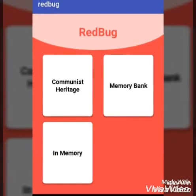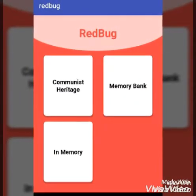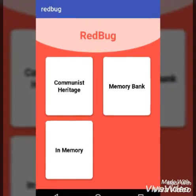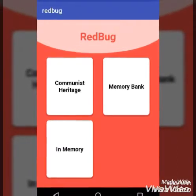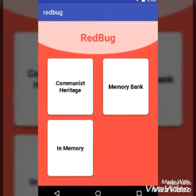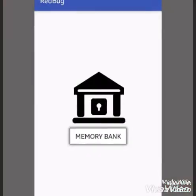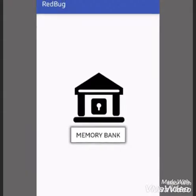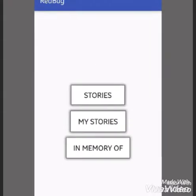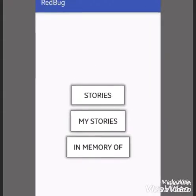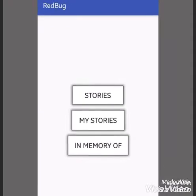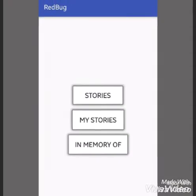The other button we have is Memory Bank. In this section, we are able to write and share stories. Memory Bank is divided into three main categories – Stories, My Stories, and the Memory Bank.